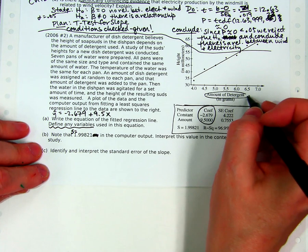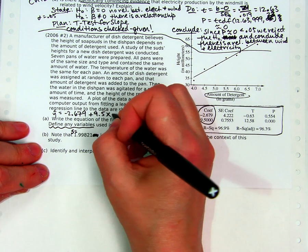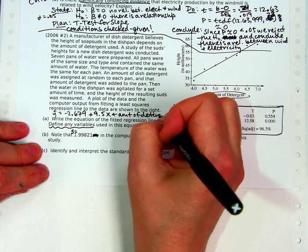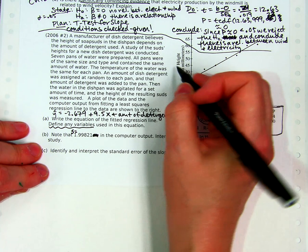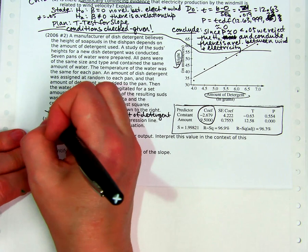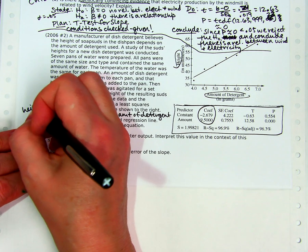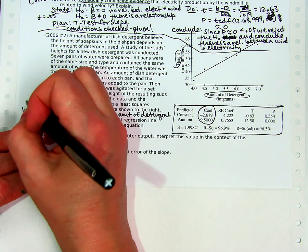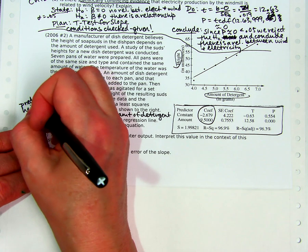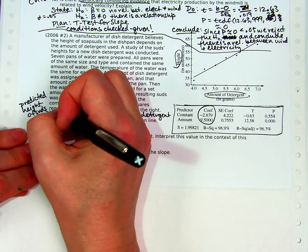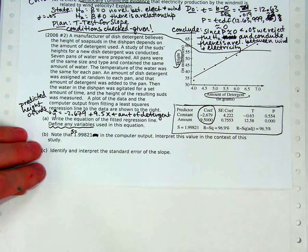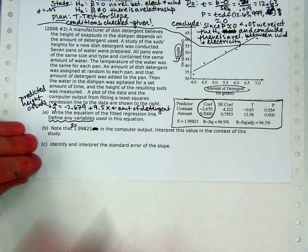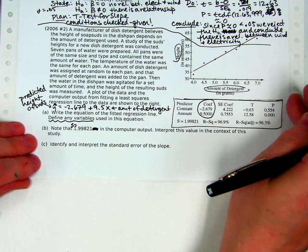The scatter plot shows that x is the amount of detergent and y is the height of the soap suds after mixing. y hat is the predicted height of suds, because it's not perfect. The hat means predicted. Part a is the same as above, a very common question when you're given computer output.